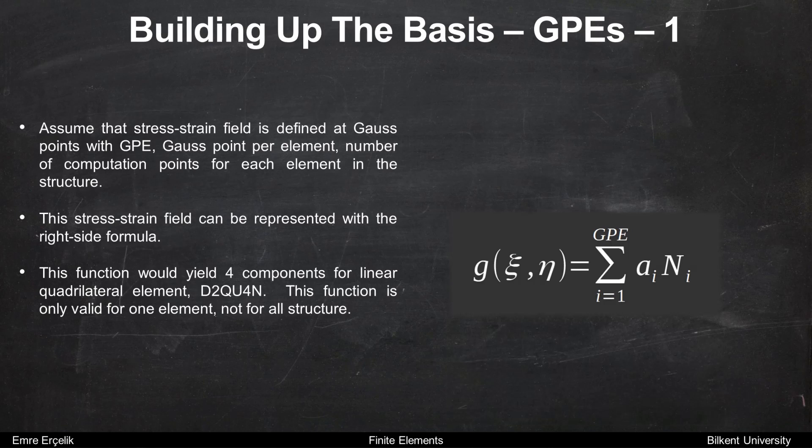Assume that the stress-strain field is defined at Gauss points with number of Gauss points per element, number of computation points for each element in the structure. This stress-strain field can be represented with the right side formula. This function would yield four components for linear quadrilateral element, in other words D2Q4N.